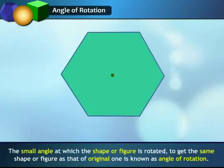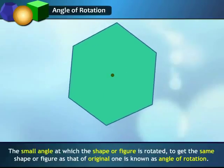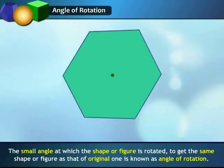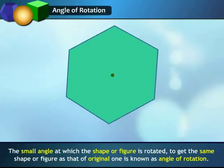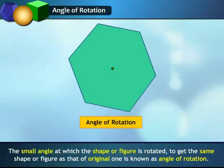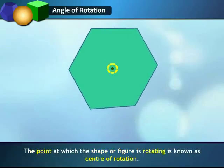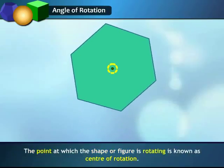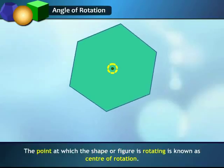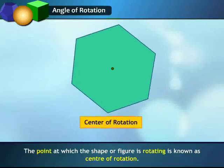The smallest angle at which the shape or figure is rotated to get the same shape or figure as that of the original one is known as the angle of rotation. The point at which the shape or figure is rotating is known as the center of rotation.